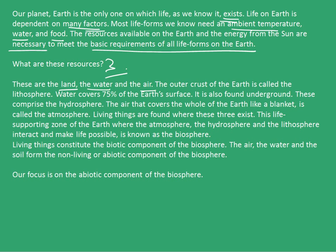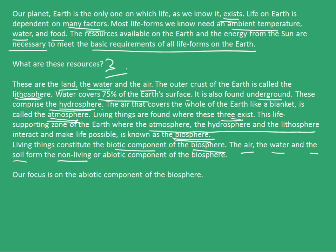The outer crust of the Earth is called the lithosphere. Water covers about 75% of Earth's surface and is also found underground — these comprise the hydrosphere. The air that covers the whole of the Earth like a blanket is called the atmosphere. Living things are found where these three exist. This life-supporting zone where the atmosphere, hydrosphere, and lithosphere interact and make life possible is known as the biosphere. Living things constitute the biotic component, while air, water, and soil form the abiotic component of the biosphere.